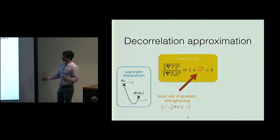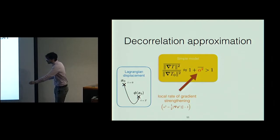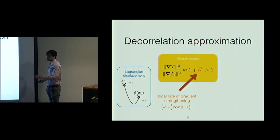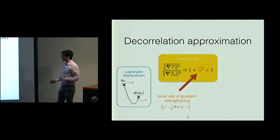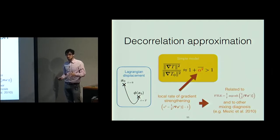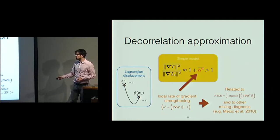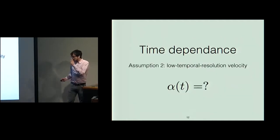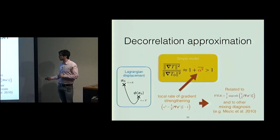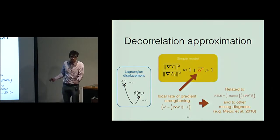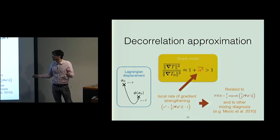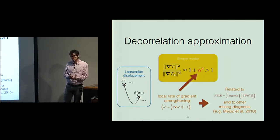The factor alpha squared does not depend on the tracer; it depends only on the Lagrangian displacement phi, which takes a point and moves it with the velocity from t=0 to t=T over a finite time. Alpha squared can be related to classical mixing measures like the finite-time Lyapunov exponent or other mixing diagnostics like the mesochronic velocity — the average velocity between two points. To get a very low-cost analytic formula like the Okubo-Weiss criterion, we need a formula for alpha squared, requiring a second assumption.